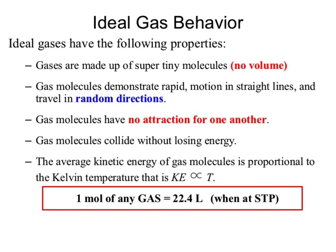Zero degrees Celsius — that's 32 degrees Fahrenheit, or 273 Kelvin. When was the last time you were at zero degrees Celsius? In Arizona, maybe if you went up to Flagstaff in winter, you might get there.